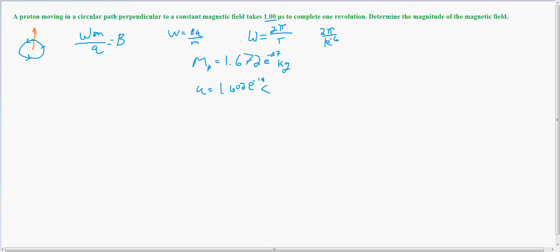So now that I have w, the mass of the proton, and the charge of the proton, I just plug it into this formula right here and I get B. So what I do is it's 2pi divided by 1e to the negative 6 seconds.